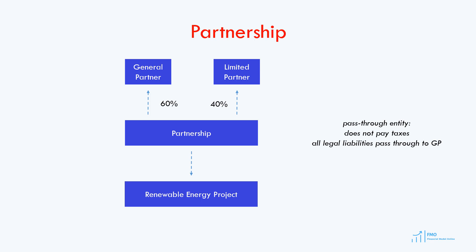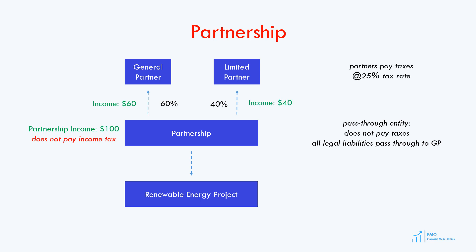Note that the legal liabilities pass through to the general partner. Now, suppose that the partnership made an income of 100 from its renewable project. 60% of the income would go to the general partner, and 40% of the income would go to the limited partner. Assuming a tax rate of 25%, the general partner would pay 15 as income tax from the income received from the partnership, and the limited partner would pay 10 as income tax from the income received from the partnership.